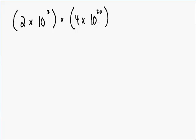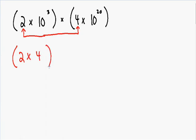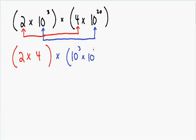Whenever you multiply, the order in which you multiply does not matter. So the first thing I'm going to do is multiply the constants. We have a constant of 2 and I'm going to multiply that with our other constant of 4. After we multiply our constants, we need to multiply our base tens. So we have 10 with an exponent of 3 and we need to multiply that with our other 10 with an exponent of 20, giving us 10 to the third multiplied by 10 to the twentieth.